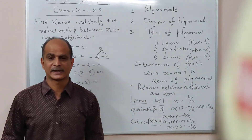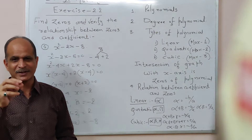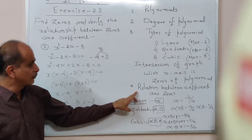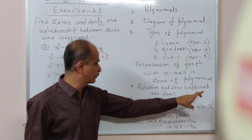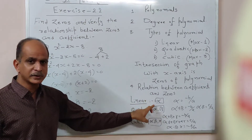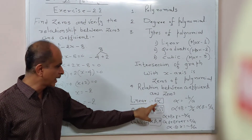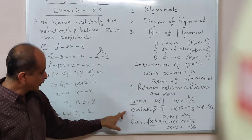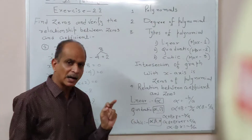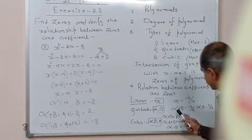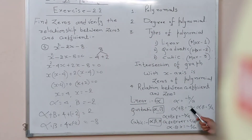We also covered exercise 2.1 to find out the zeros of the polynomial. We also discussed one very important concept: the relation between coefficients and zeros. For a linear polynomial, it has one zero, denoted by alpha, and the value of alpha is equal to minus b by a. For a quadratic polynomial, it has two zeros, alpha and beta. The relation is: alpha plus beta equals minus b by a, and alpha into beta equals c by a.